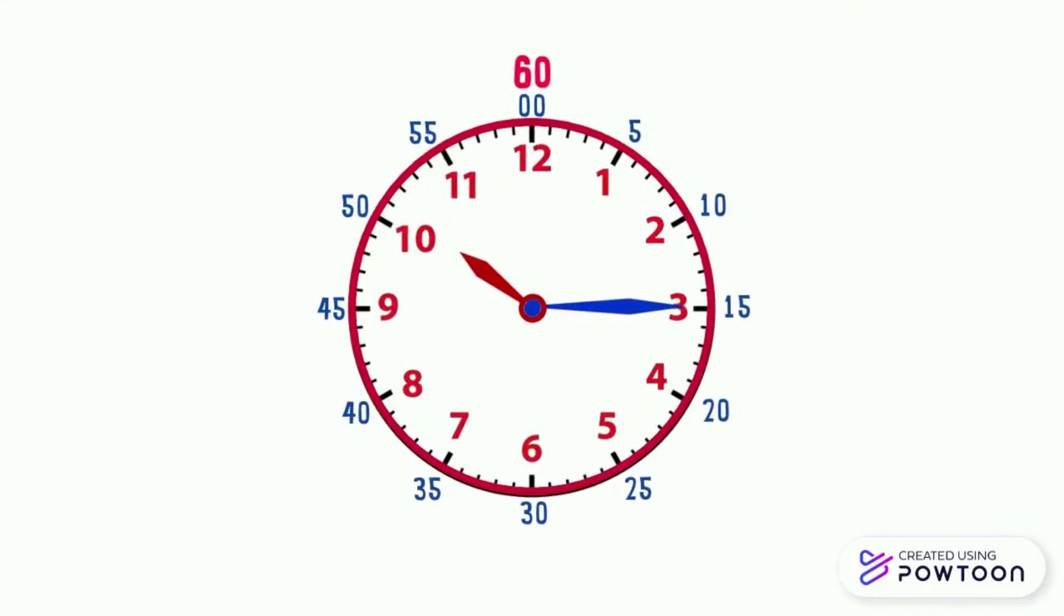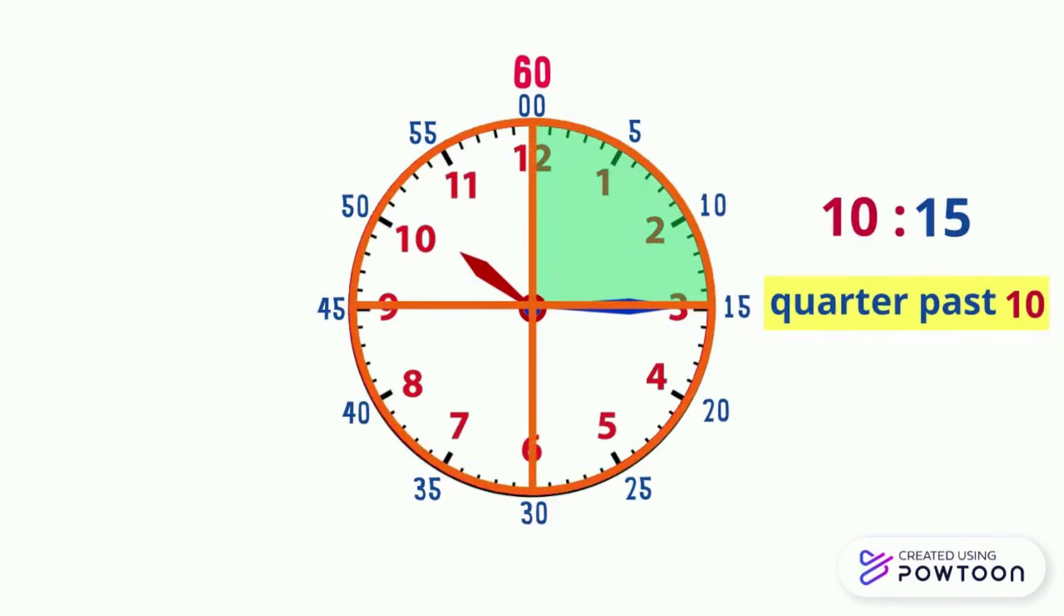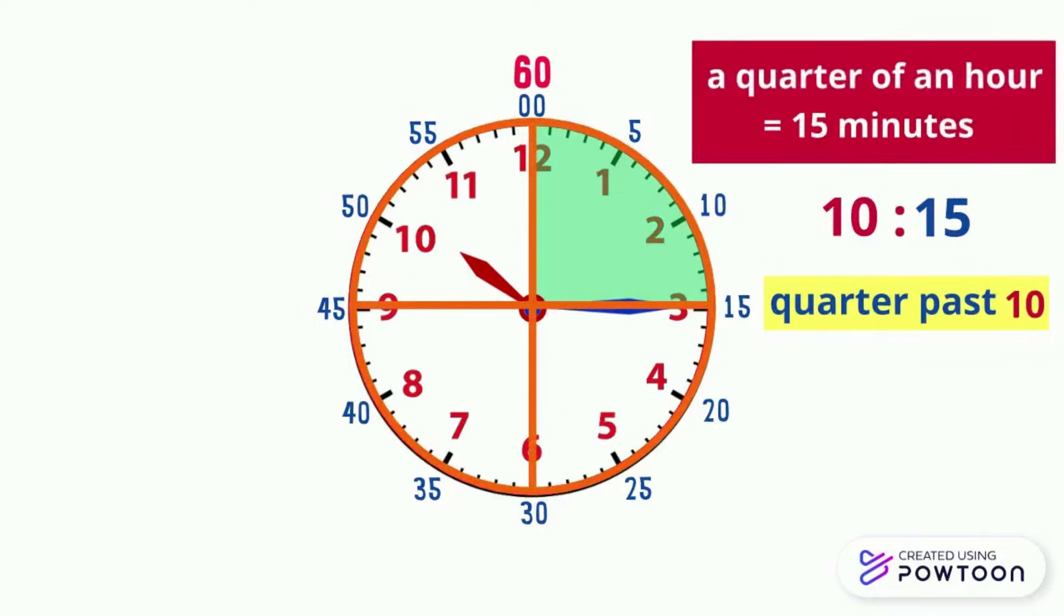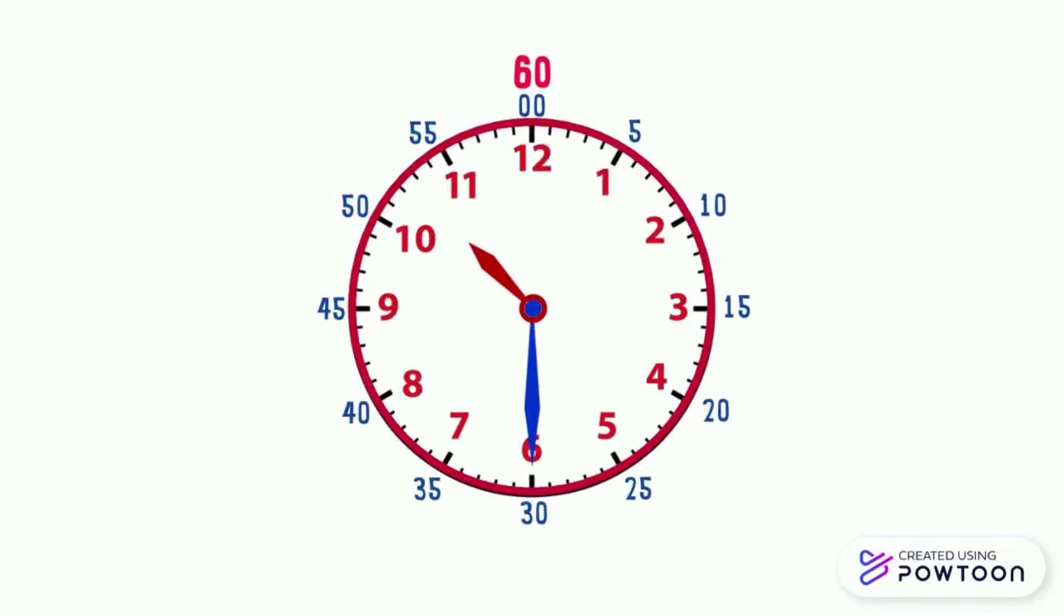I remind you again that when the large hand is pointing on the number 3, we say 10:15 or quarter past 10, since a quarter of an hour is equal to 15 minutes. And when the large hand is pointing on the number 6, we say 10:30 or half past 10, because we did half an hour. Half an hour is equal to 30 minutes.